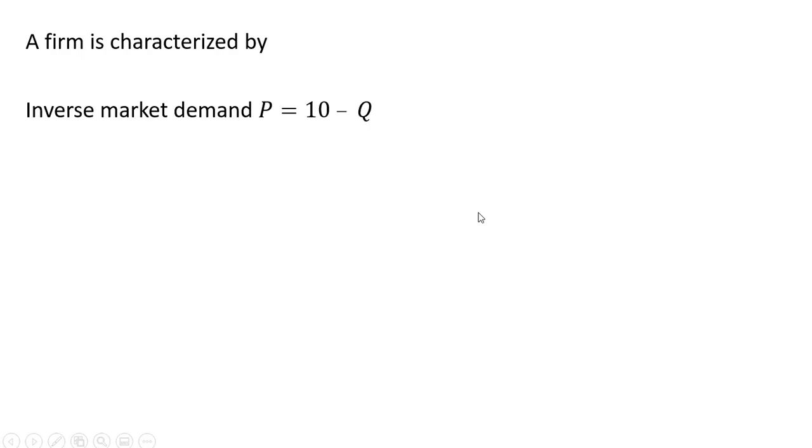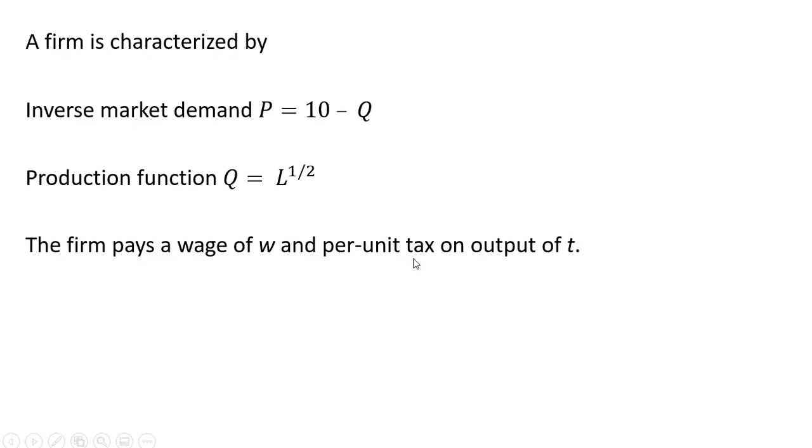Here's the setup. A firm is characterized by the following: it faces an inverse market demand of P equals 10 minus Q. The firm's production function is Q equals L to the one-half, where L is units of labor. The firm pays a wage of W and a per-unit tax on output of t.